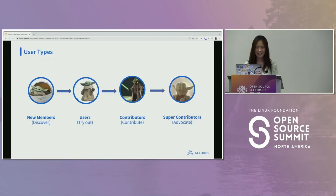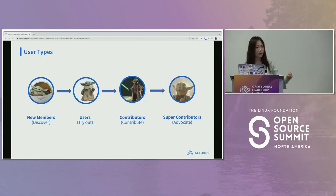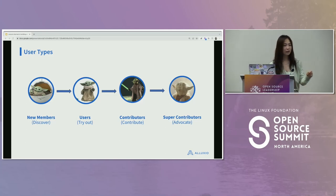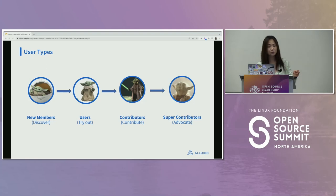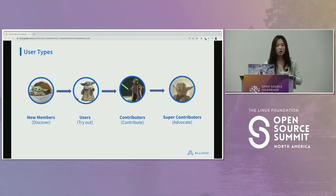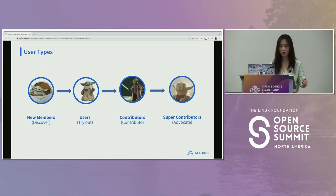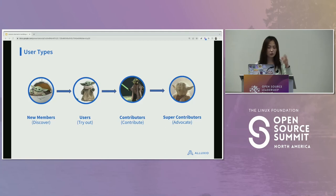Community growth flywheel: first, define user types. There are four: people who discover your product, people who try it, people who contribute, and people who advocate. Contribution doesn't have to be code — if someone is passionate and just talks about it, that's also contribution. For each type, keep in mind who they are, what they want from your community, how you reach them, and what they can do for you.